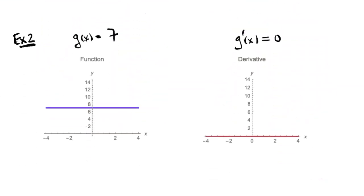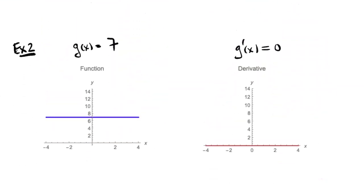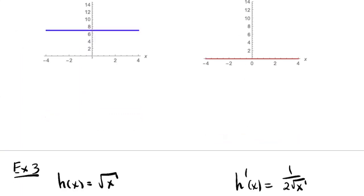The constant function g of x equals 7 — its graph is a horizontal line; the constant value is just the y-intercept, here at 7. Its derivative we computed was identically zero. That makes sense geometrically: the tangent slope is zero everywhere because this is a line of slope zero. The tangent line to a line is itself.